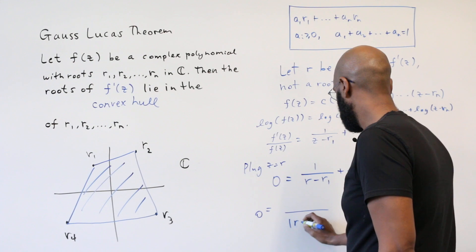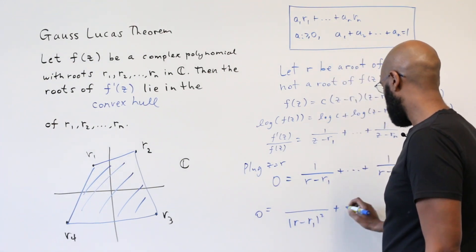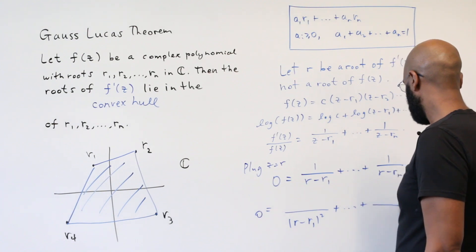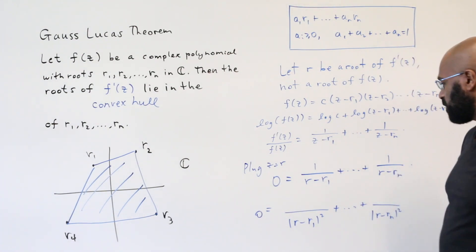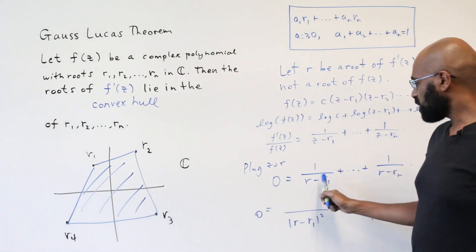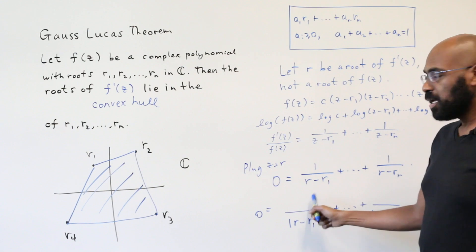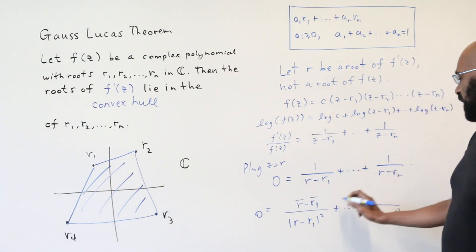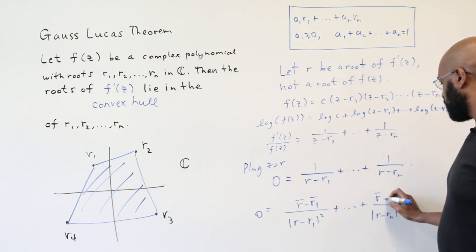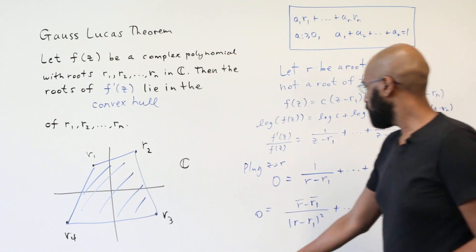So at the bottom we're going to get r minus r1, the modulus of r minus r1 squared up to r minus rn modulus squared. And then at the top we're going to get the conjugate of r minus r1, which is the same as the conjugate of r minus the conjugate of r1, et cetera, up to the conjugate of r minus the conjugate of rn.